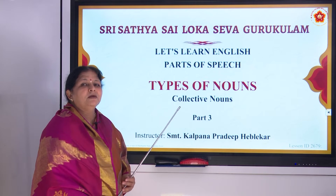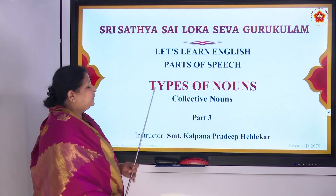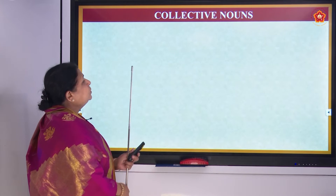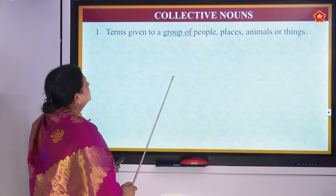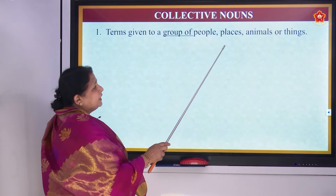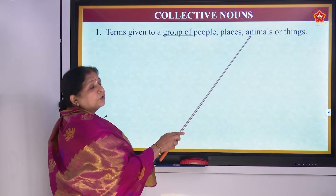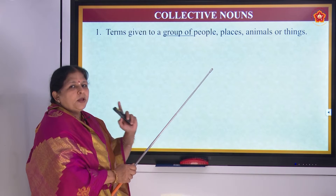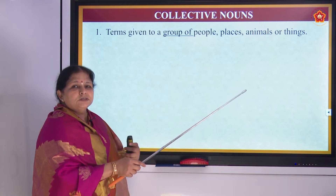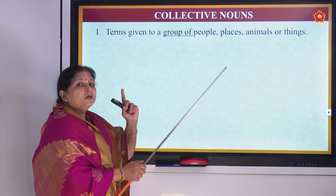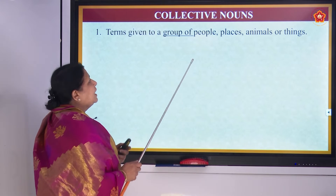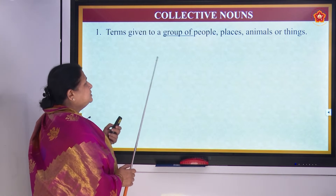Are you all ready to be with me? Very good. Collective nouns means terms given to a group of people, places, animals or things. For example, one cow, so many cows together — we cannot say 'so many cows' or 'so many horses.' There is one word for saying the group of cows or animals or men.